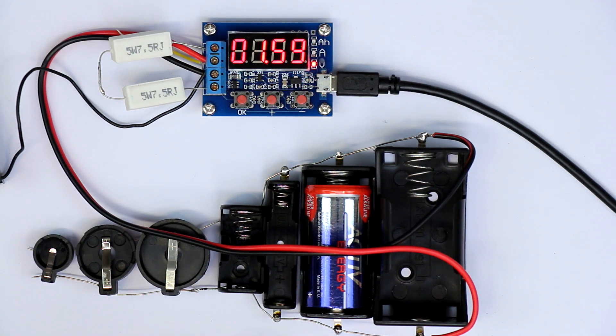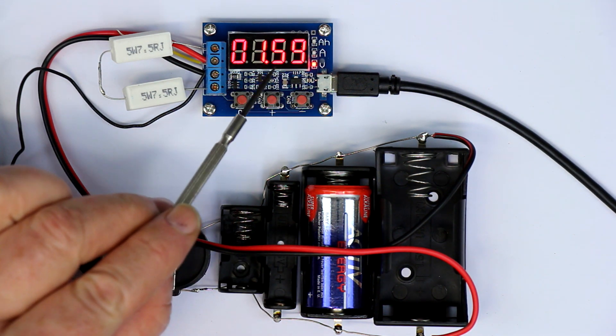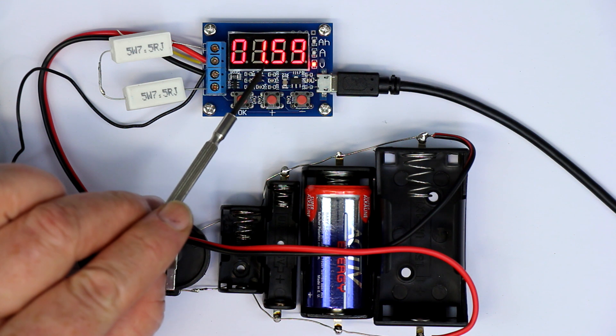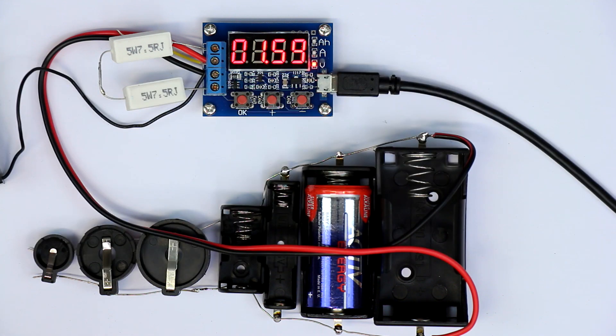This thing claims to have an accuracy of one percent concerning the voltage, 1.5 percent concerning the current, and thereby around 2 percent in the measured amp hours or milliamp hours value.